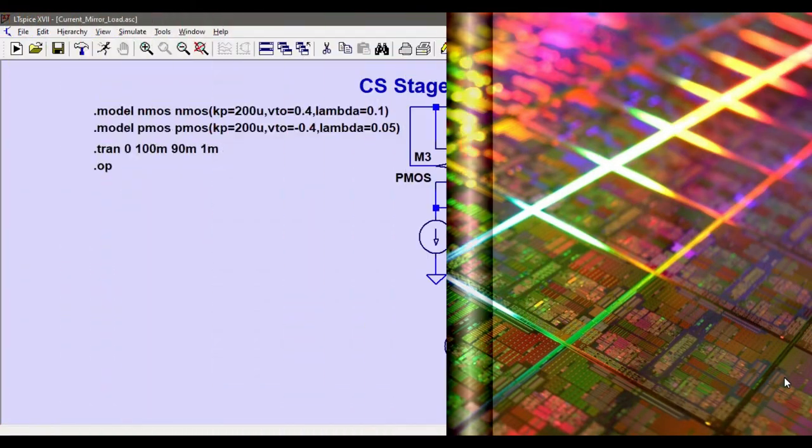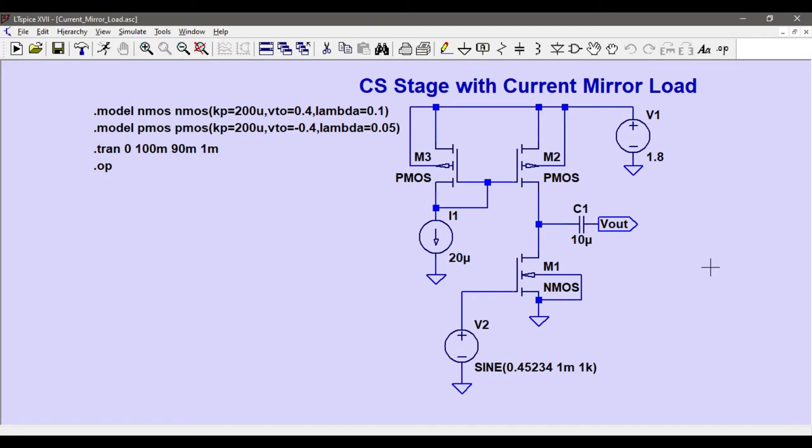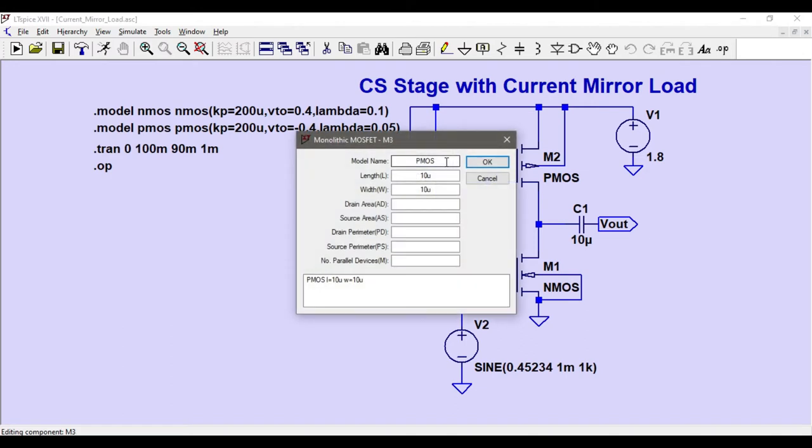Here we are in LTSpice with CS stage with current mirror load. This is the MOSFET which gives us the transconductance. So I'll keep the aspect ratios of this MOSFET and this MOSFET same. This PMOS and this PMOS have the same aspect ratio. Let's check that if it is true. This is 10 micro, 10 micro, and this is also 10 micro and 10 micro.